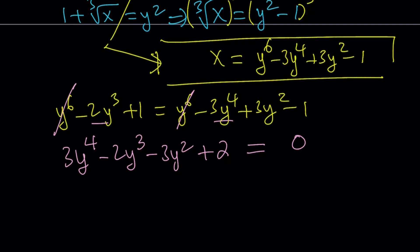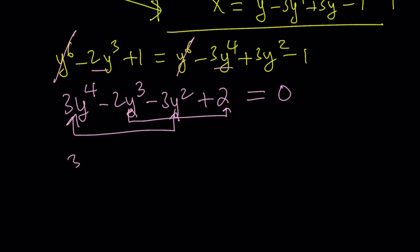With polynomial equations, one thing you should always check is the sum of the coefficients — and the sum of the odds and evens — to see whether y equals 1 or y equals negative 1 is a possible solution. In this case, 3 minus 2 minus 3 plus 2 equals 0, so y equals 1 is a solution. Grouping the terms, we can take out 3y squared to get y squared minus 1, and take out negative 2 to get y cubed minus 1.